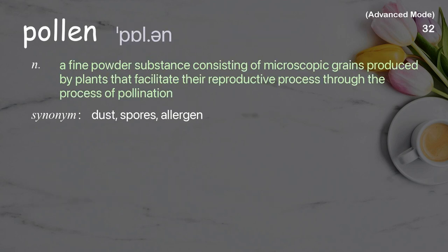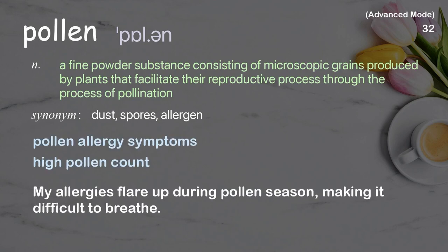Pollen: a fine powder substance consisting of microscopic grains, produced by plants that facilitate their reproductive process through the process of pollination. Examples: pollen allergy symptoms; high pollen count. My allergies flare up during pollen season, making it difficult to breathe.